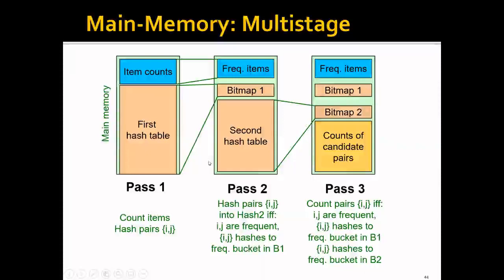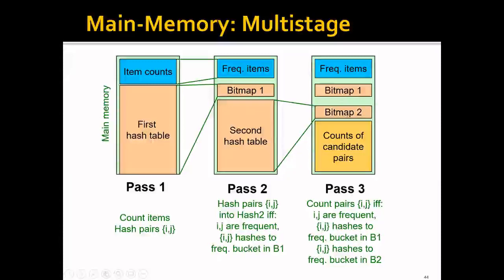When we build the second pass table, we will only hash the pairs which satisfy the two conditions. The first condition is that i and j are frequent. The second is that ij hashes to a frequent bucket in the first pass. Then we get the second pass table. In the third pass, we count only the pairs that have bit one in both bitmaps, and of course the pair also needs to satisfy the original condition that i and j are frequent.